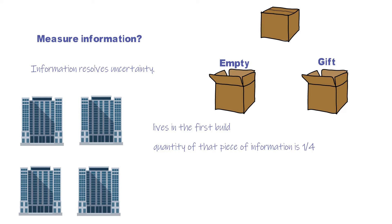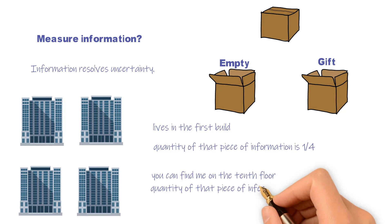Then he sent you a text message: you can find me on the 10th floor. Because it is a 10-story building, the quantity of that piece of information is one-tenth. As you may notice, bigger number means that information is more important.